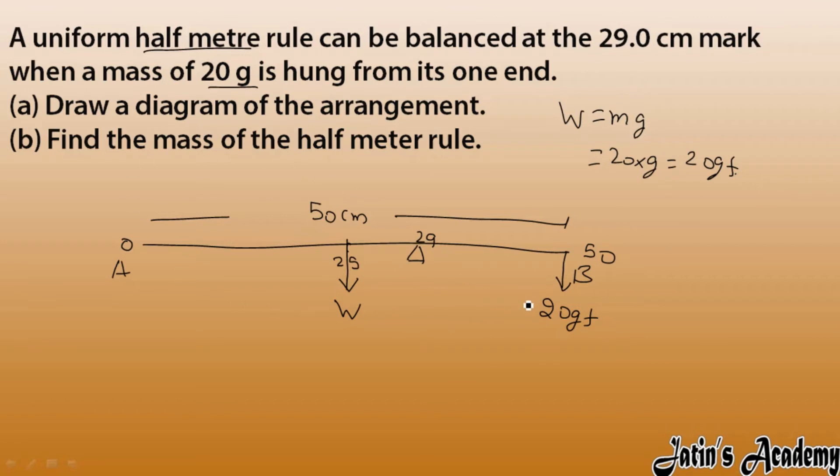So now what we have to do? Draw the diagram first. Part A is clear. We have to find the mass of the half meter rule, mass of this half meter rule, that is m times g. Now what I have to do? I have to take anticlockwise moment equals to clockwise moment, same thing again and again we are doing.